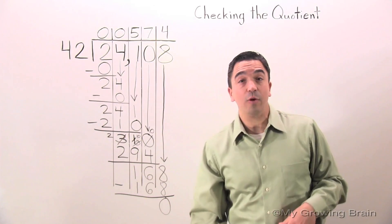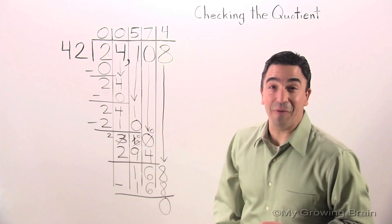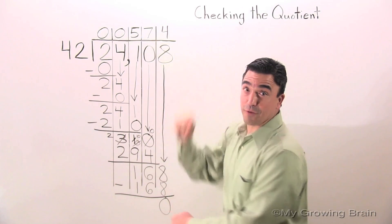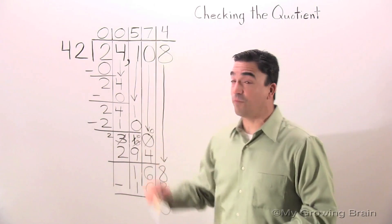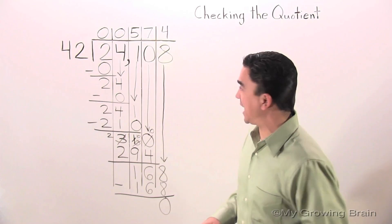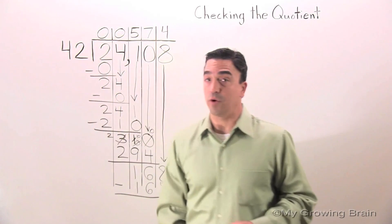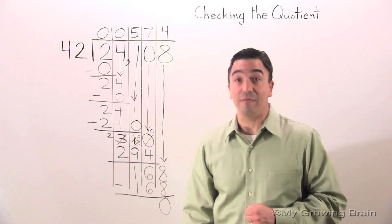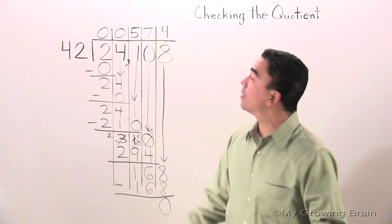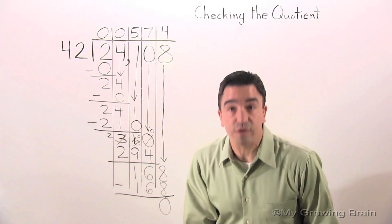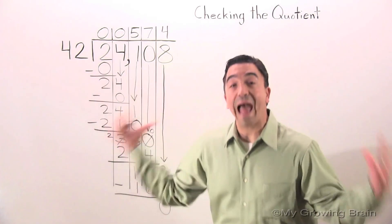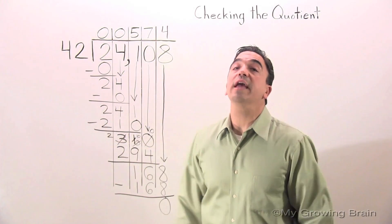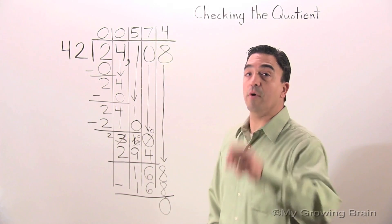Today's lesson is on checking the quotient, and this is going to be so much fun because we're checking the quotient for this big division problem: 24,108 divided by 42, which has a quotient of 574. Remember, the quotient is the answer to a division problem. We're now going to check this quotient using the inverse operation: multiplication.